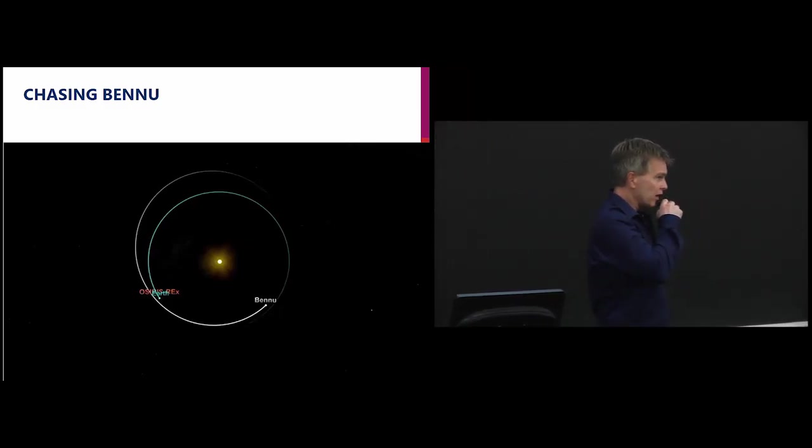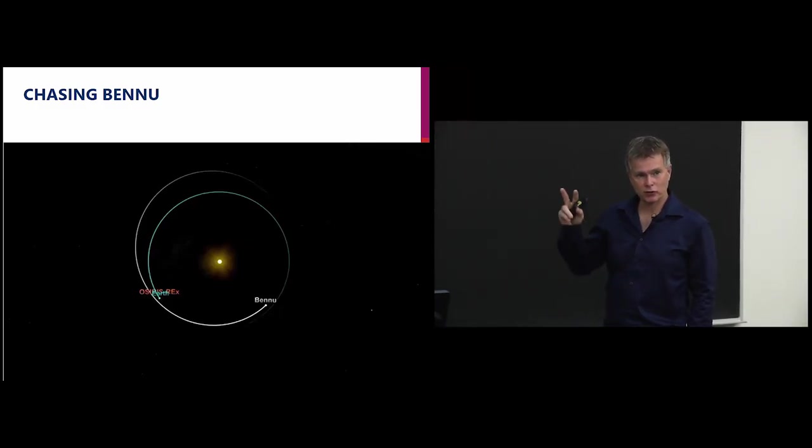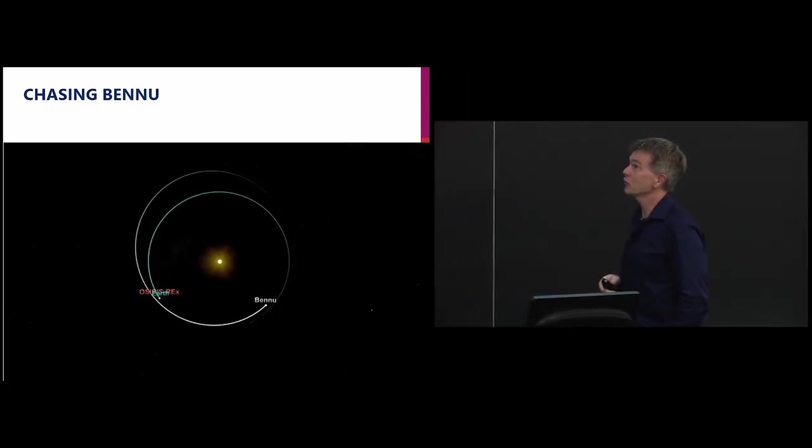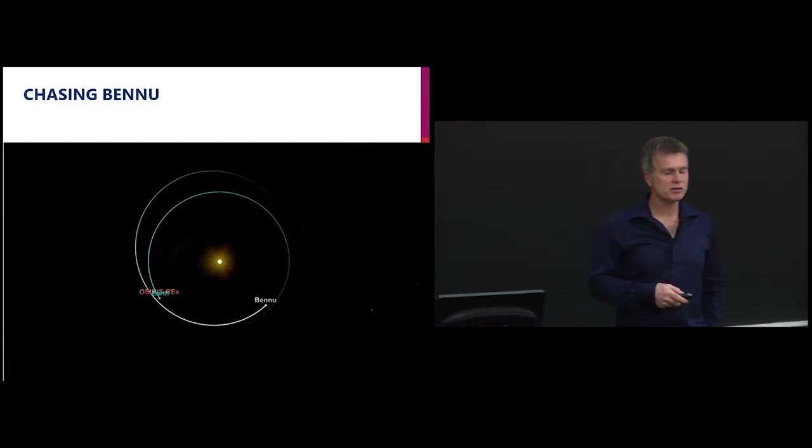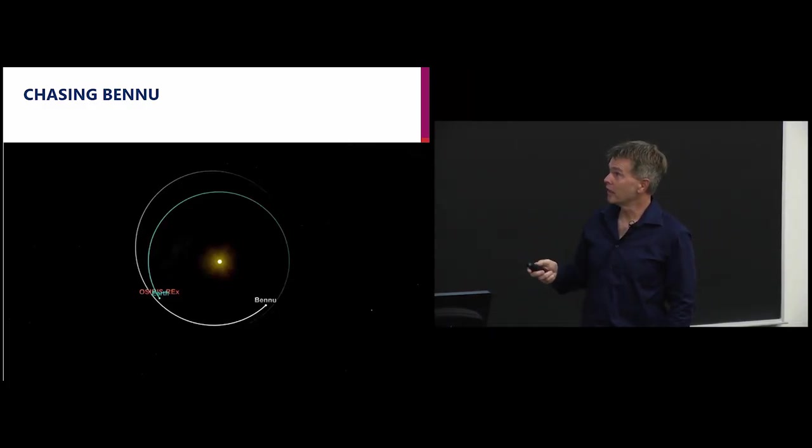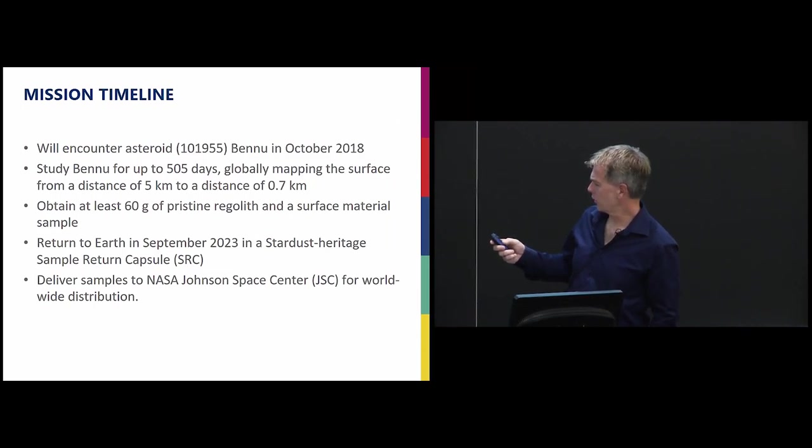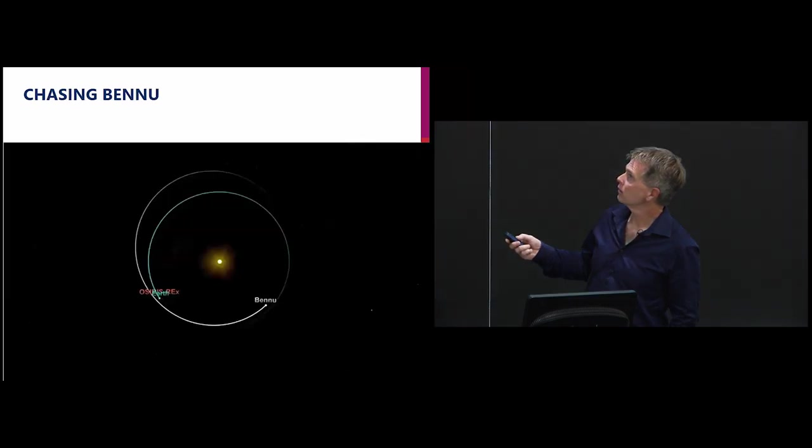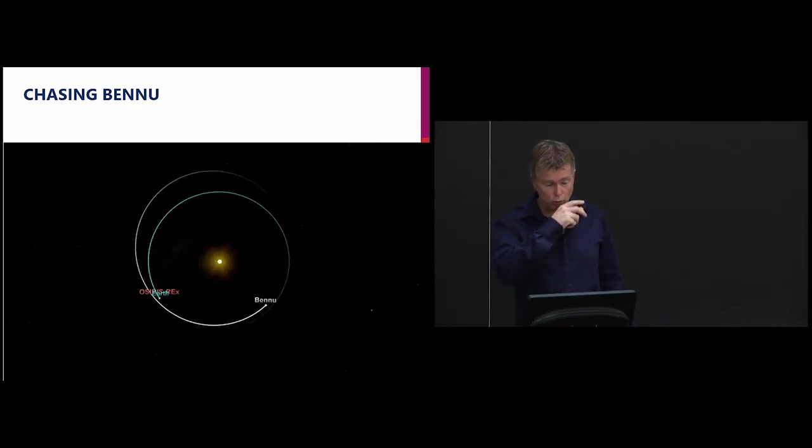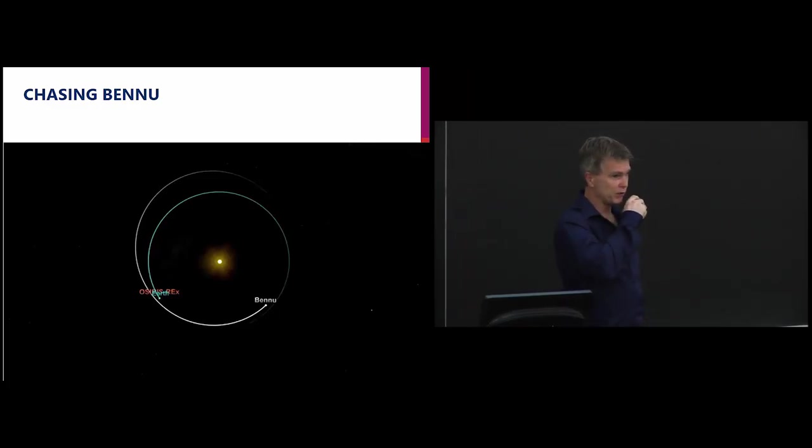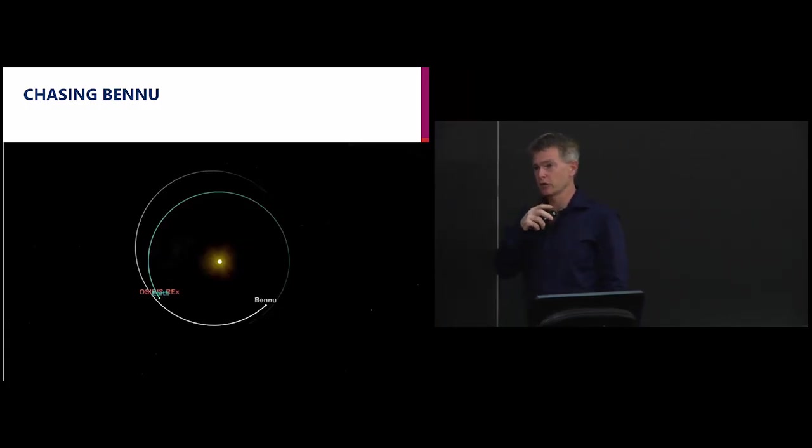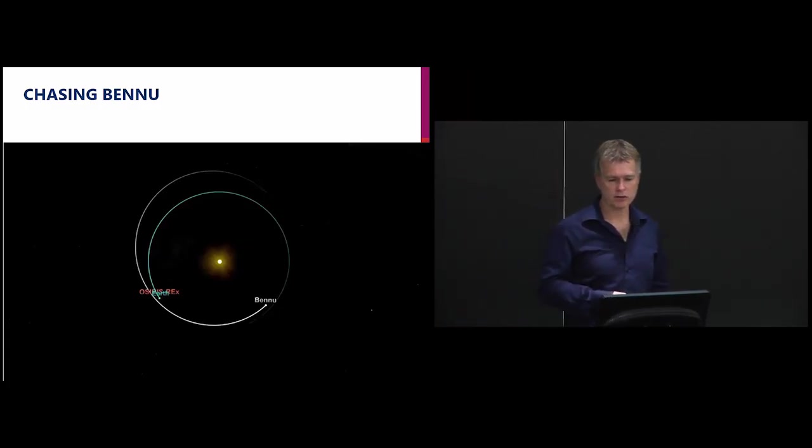Our target for this mission is what's termed a small body, a small asteroid. And this asteroid has the name of Bennu. It was named by a student in a competition. Right now what's happening with the mission is our spacecraft is really playing catch up with Bennu. We're going to catch up with Bennu about a year from now, a little longer than a year from now. And then we're going to start seeing up close this target we've chosen.